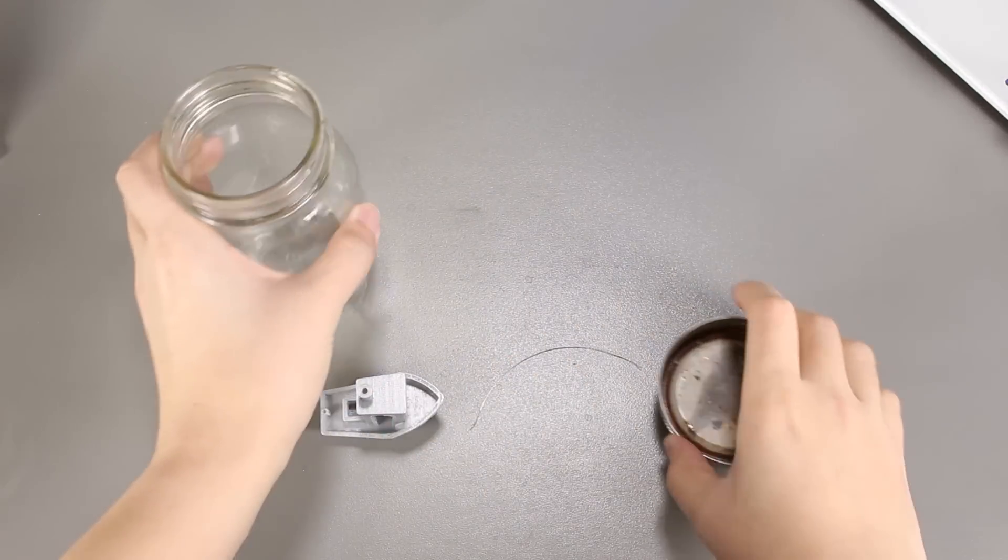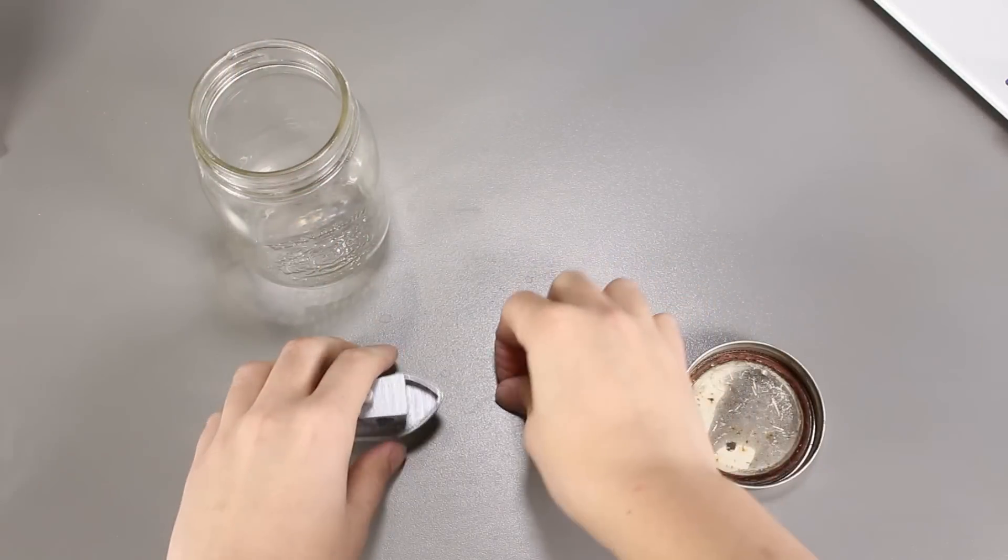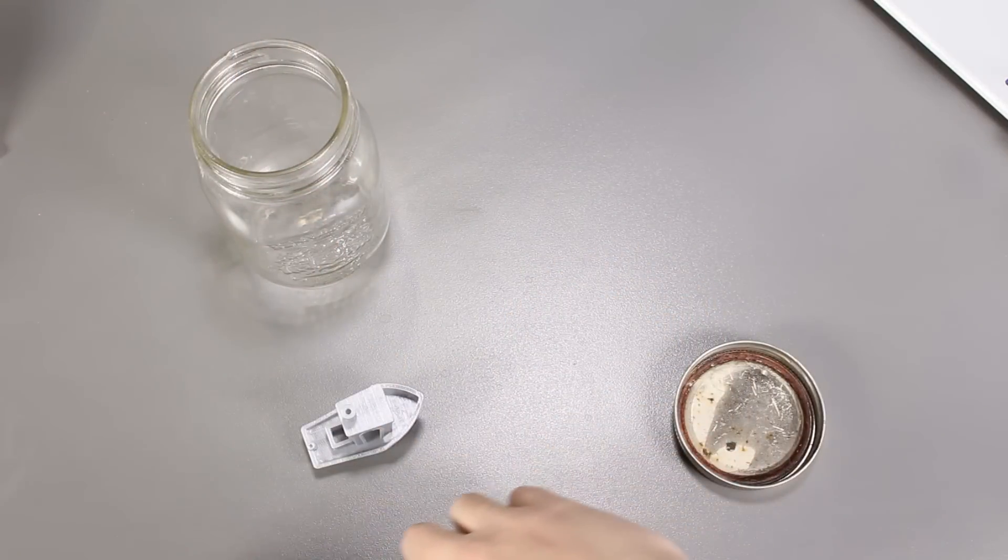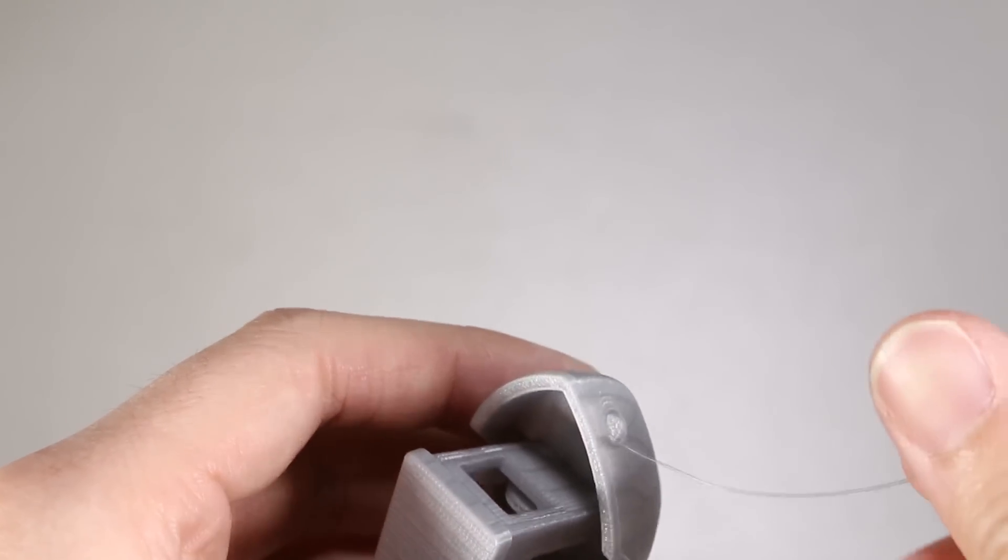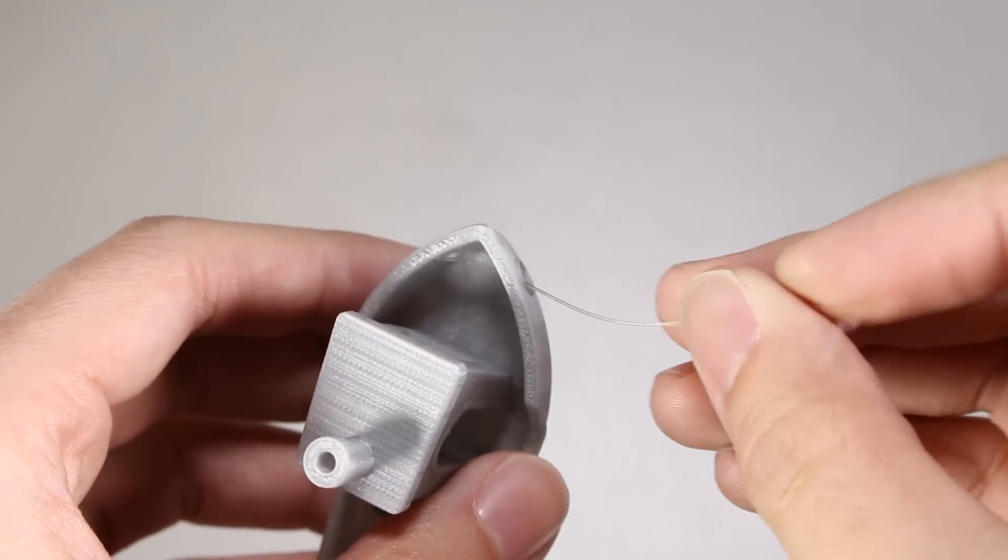We will not be using any heat in this experiment to help with the vapor smoothing. The process will be the same as using acetone for the vapor smoothing. So let's take some tape and start that process. Afterwards put the string through the benchy boat so we can hang it.